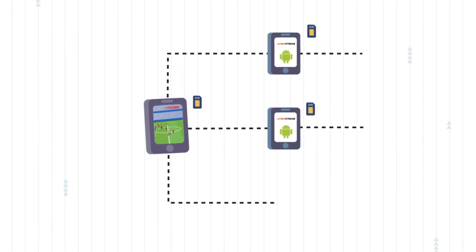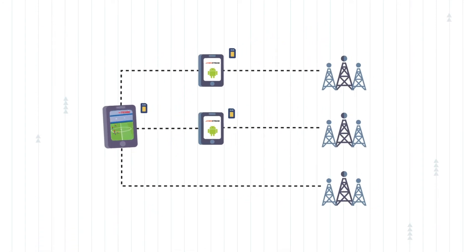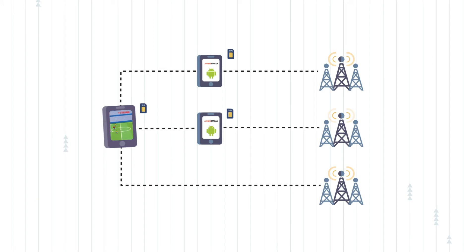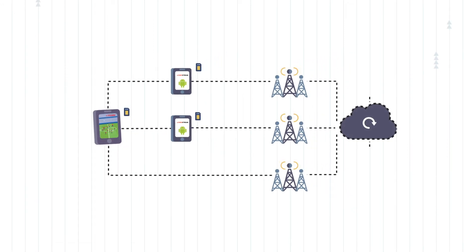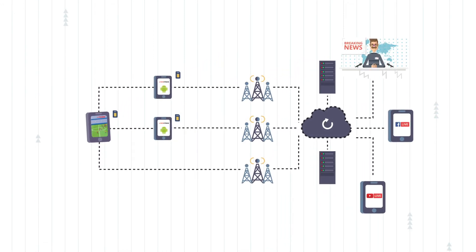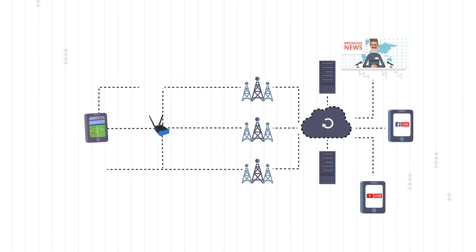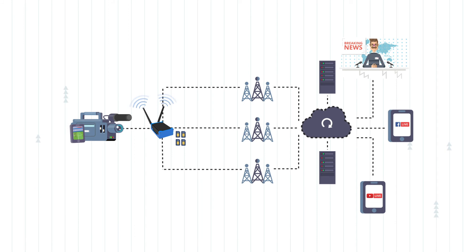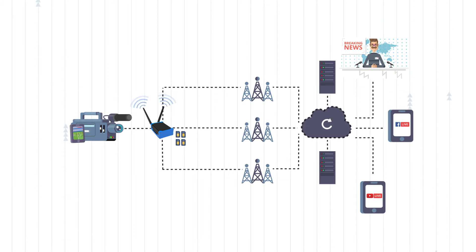It works by transmitting a primary video stream via our Android app, which splits the video stream apart in real-time through collaborative smartphones. Once it reaches our bonding cloud, the data is stitched together and transmitted to your chosen platforms live. It can also be done using a professional camera with one or multiple KiloView encoders for the highest streaming quality.